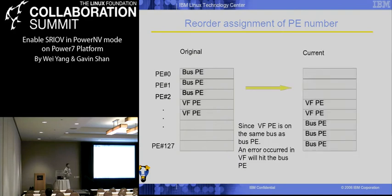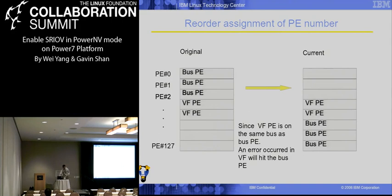The solution is to reorder the whole PE assignment. Previously we assigned those PEs from zero upward. Now we reorder so that we assign those PEs from the bottom up. During the scan, we will hit the exact VF first. This is what we need to change.